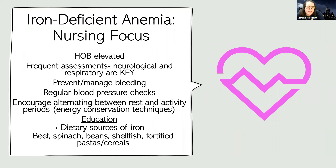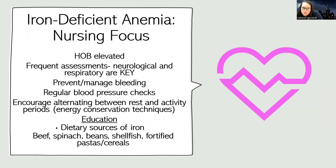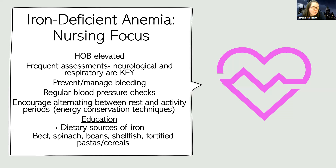As the nurse, I'm going to keep the head of bed elevated to support positive breathing. I'll do frequent neurological and respiratory assessments. Preventing and managing any sort of bleeding is especially important because blood loss can lead to iron loss. Regular blood pressure checks help ensure they're not having a severe drop. Teach energy conservation techniques. Also teach them about increasing iron intake through food — good dietary sources include beef, spinach, beans, shellfish, and iron-fortified pastas and cereals.